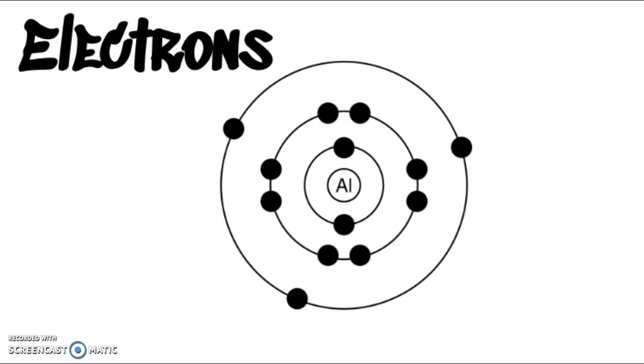In the first shell, you can have up to two electrons. So one, two, it's full. And the second can have up to eight. So one, two, three, four, five, six, seven, eight. This one is full as well.